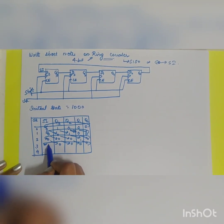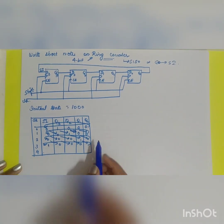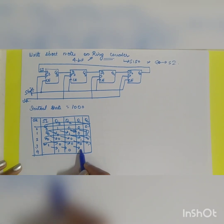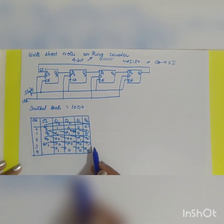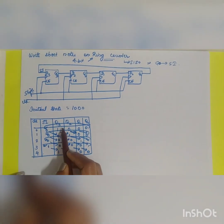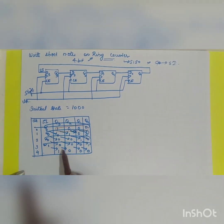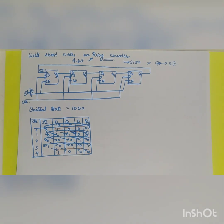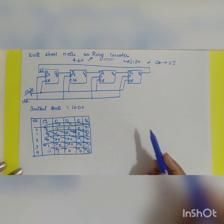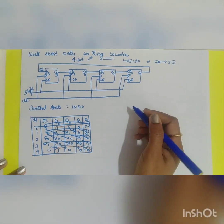During the third clock pulse: 0 shifts to Q3, 0 to Q2, 0 to Q1, 1 shifts to Q0 — giving 0 0 0 1. During the fourth clock pulse: 1 shifts to Q3, 0 to Q2, 0 to Q1, 0 to Q0 — giving 1 0 0 0. The initial data is recovered at the fourth clock pulse. This circulatory principle is called a ring counter.